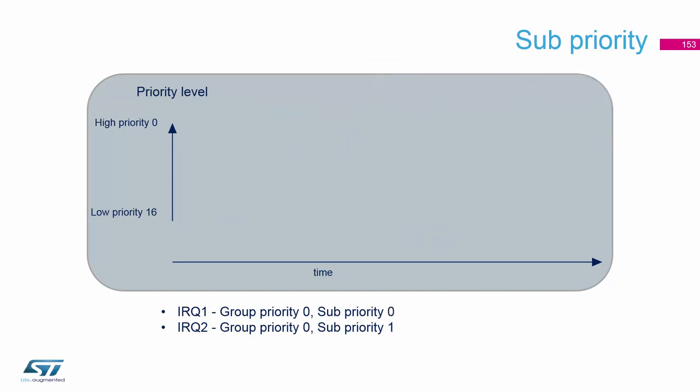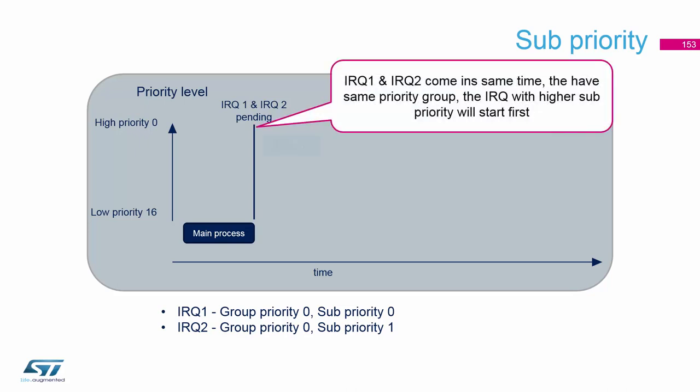But in case these two interrupts arrive at the same time, then the sub-priority takes its role. The interrupt with the lower sub-priority value will be executed first — in this case IRQ1 — and after IRQ1 ends we continue with IRQ2. So sub-priority only takes effect when the interrupts arrive at the same time.